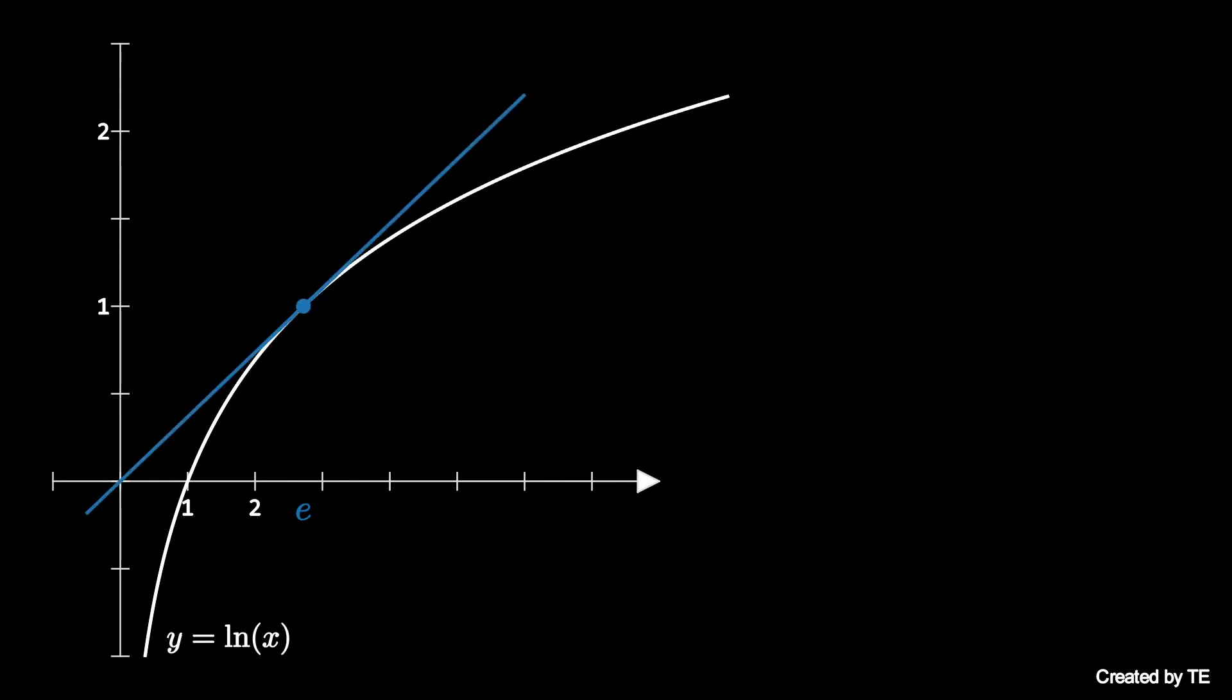Therefore, secant lines passing between the origin and x values larger than e have decreasing slopes as x value increases.